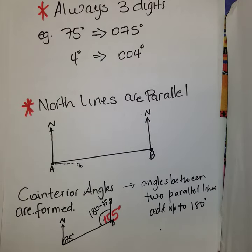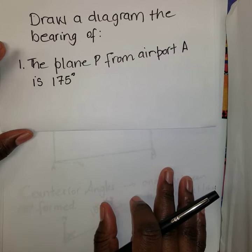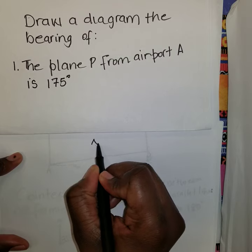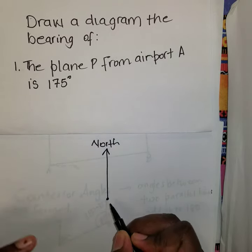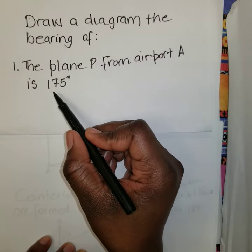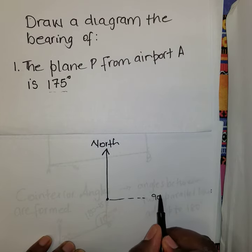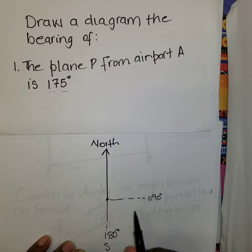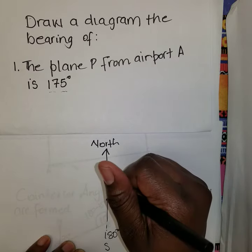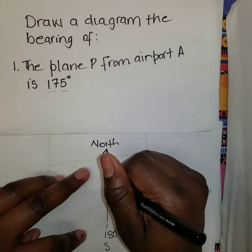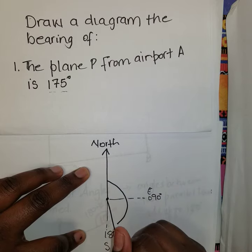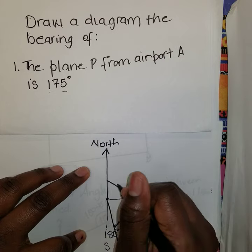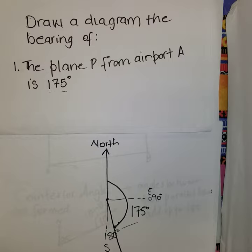Let's draw a diagram for the following bearing: plane P from airport A is on a bearing of 175 degrees. The first thing we do is draw our north line. We know east is 90 degrees and south is 180 degrees, so 175 degrees falls between east and south, close to south. Starting from the north line and going clockwise, we draw the line at 175 degrees — this region here represents the 175 degrees.